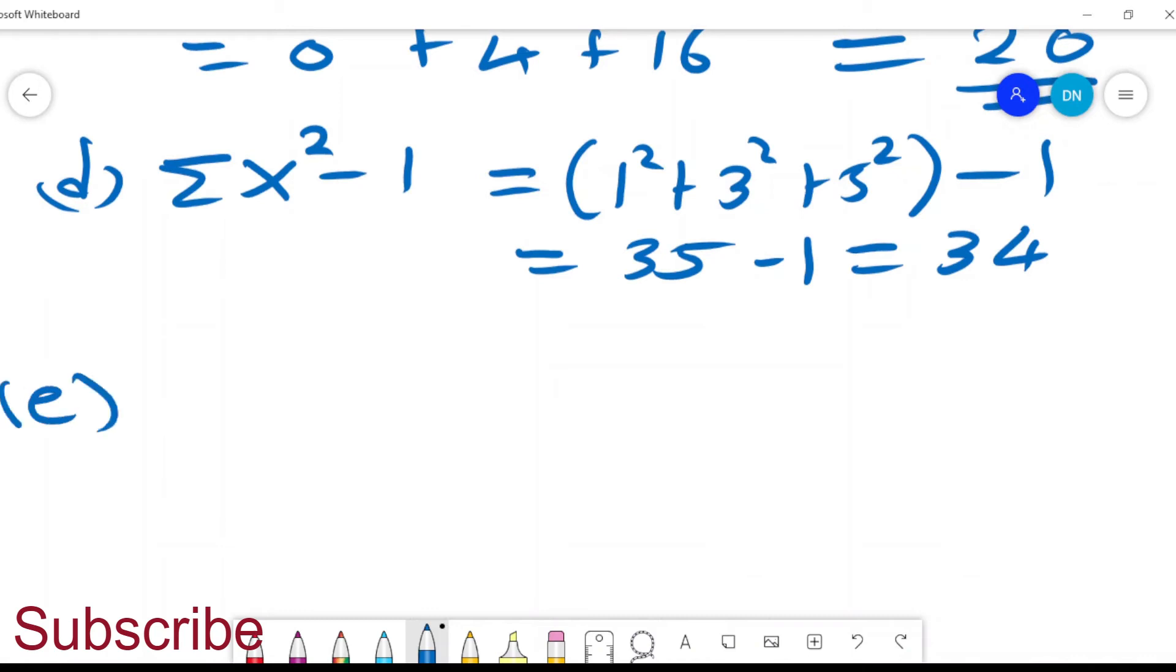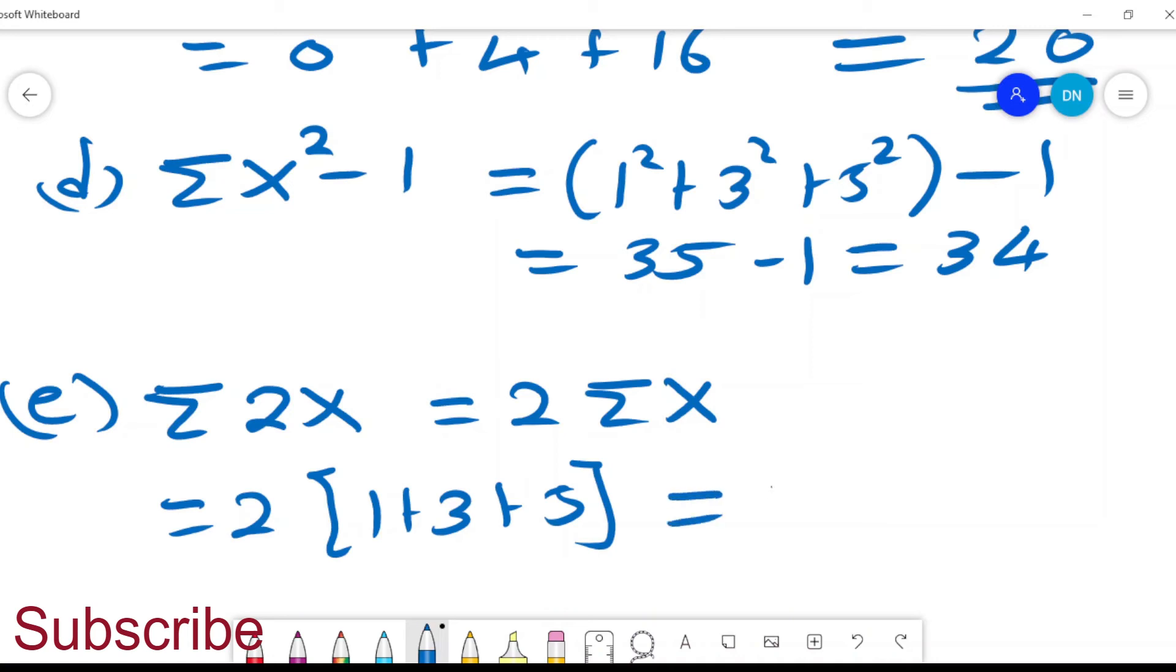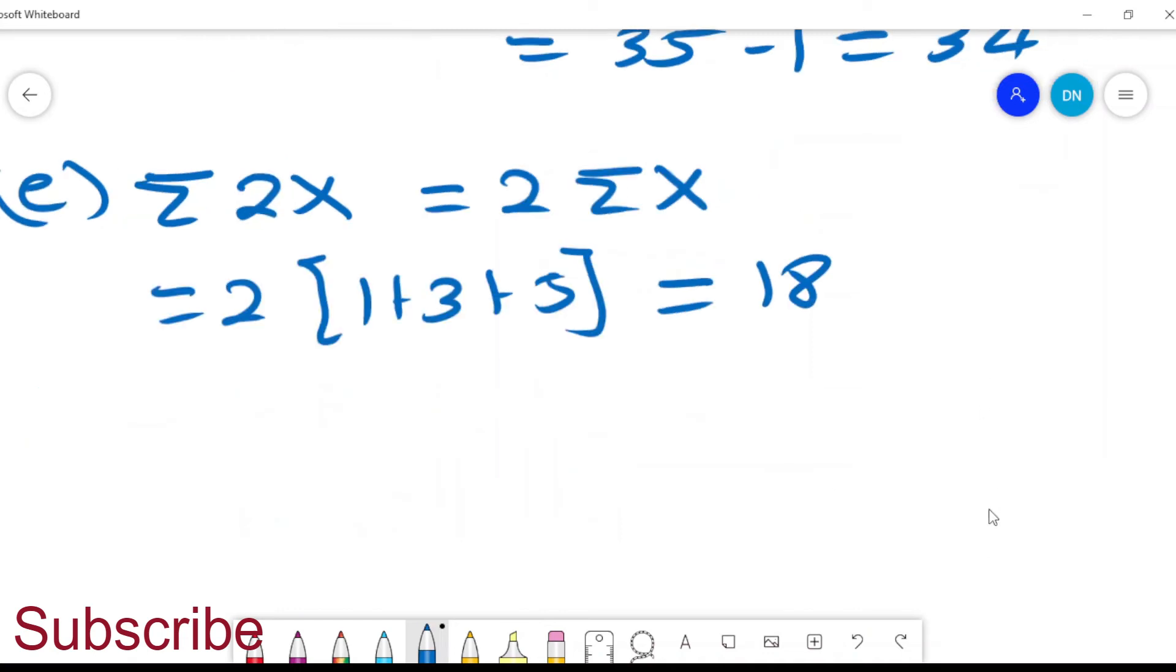I could give you other examples. For example, I tell you to find the summation of 2x. This I can also write as 2 times summation of x. What does that mean? It means I can put 2 outside and just sum x, and this will give me 9 times 2, which is 18.